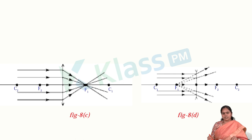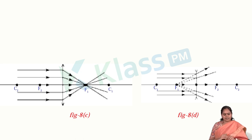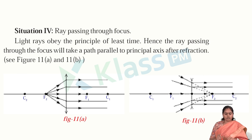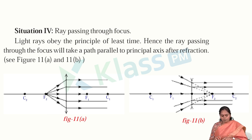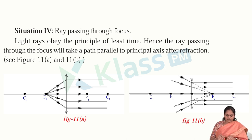In situation 4, a ray passing through the focus: light rays obey the principle of least time, so the ray passing through the focus will take a path parallel to the principal axis after refraction. Even after refraction, it will travel parallel to the principal axis. A ray passing through the focus will emerge parallel to the principal axis after passing through the lens.